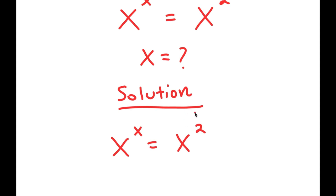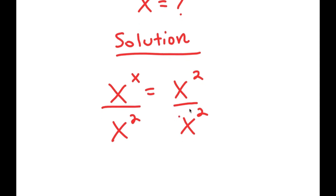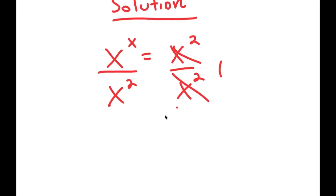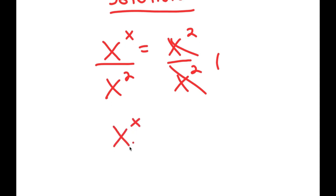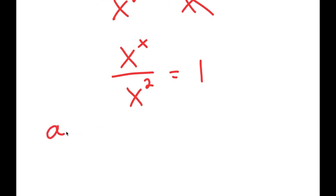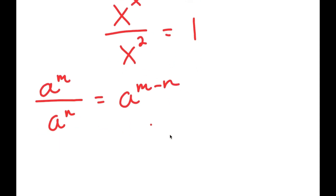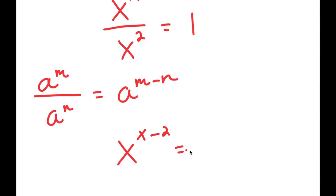I'm going to divide both sides by x to the power of 2. So I get x to the power of x over x to the power of 2 equals x to the power of 2 over x to the power of 2. The right side cancels out to 1. Using the rule a to the power of m over a to the power of n equals a to the power of m minus n, I get x to the power of x minus 2 equals 1.